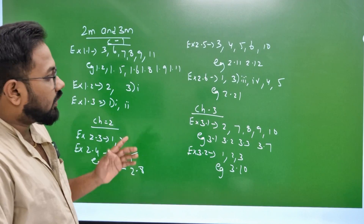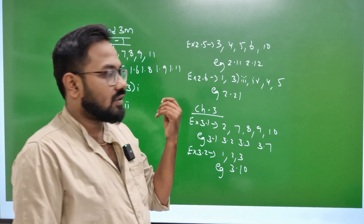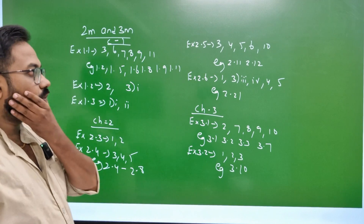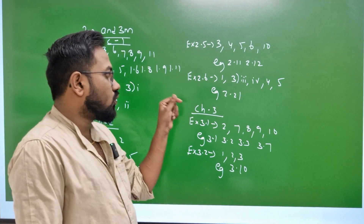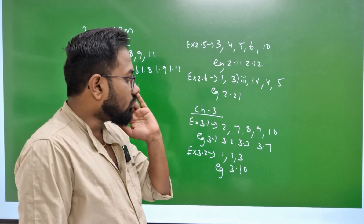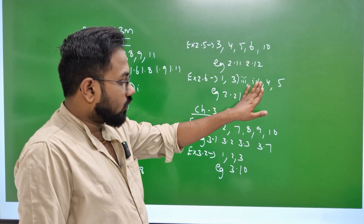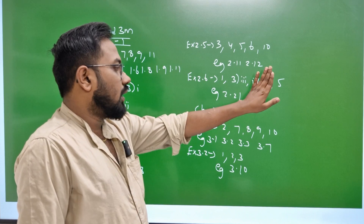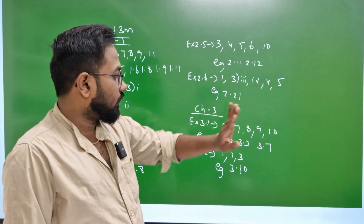2.5, 3, 4, 5, 6, 10. Examples 2.1, 2.12. X is 2.6, 1.1. 3rd, 3rd, 4th and 4th, 5th, 2.1.